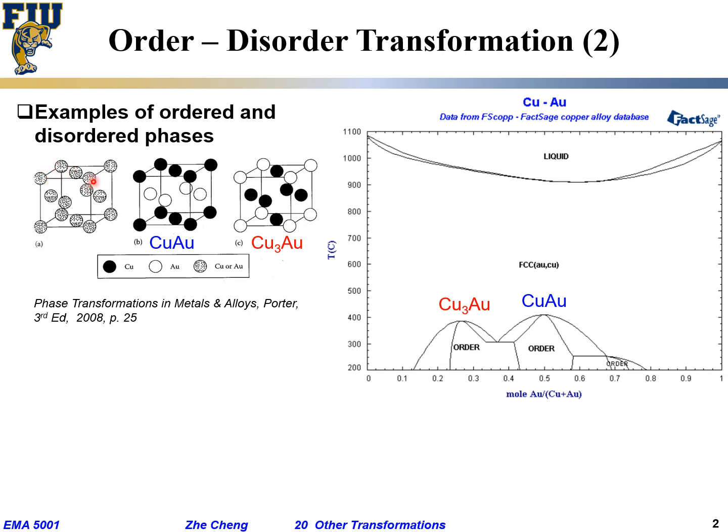But then these two are the so-called ordered phases. In this case, the black one is copper, but copper only occupies the top surface and bottom surface, while the white one, which is gold, only occupies the middle plane.